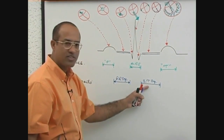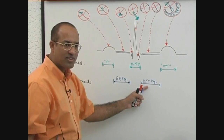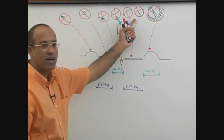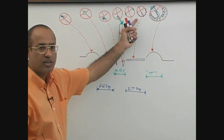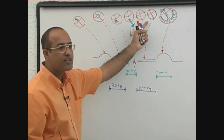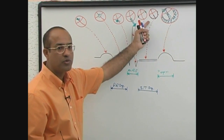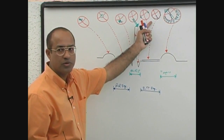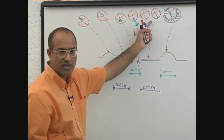During the ST segment, the whole myocardium in the ventricle is completely depolarized and there is no current moving, no vector moving through the ventricle.